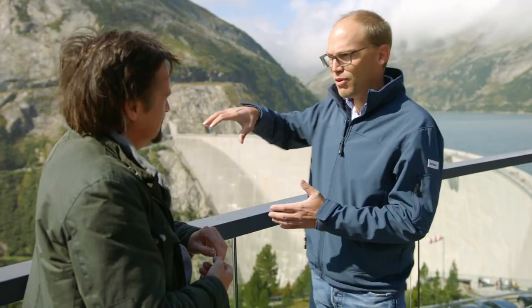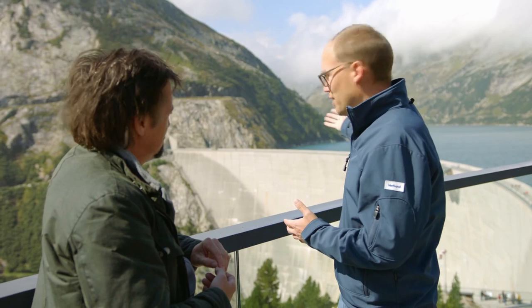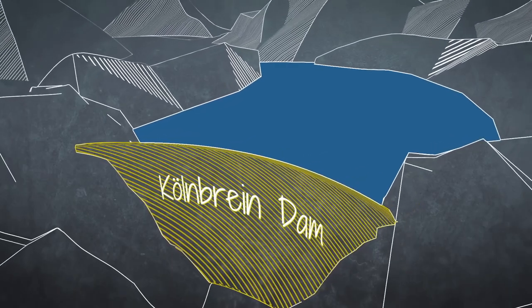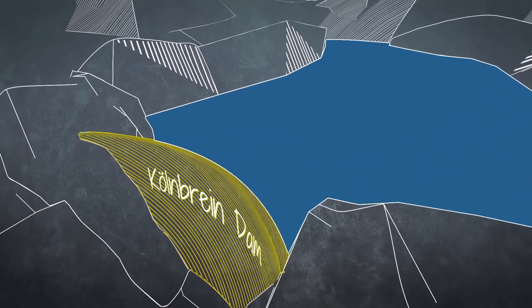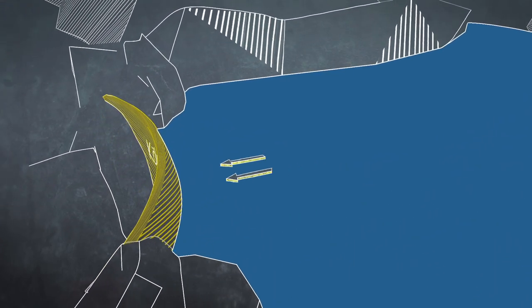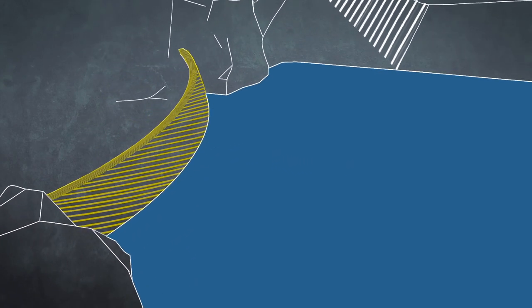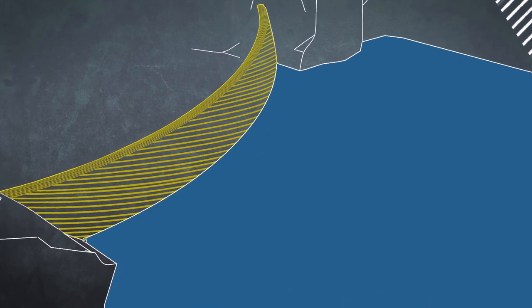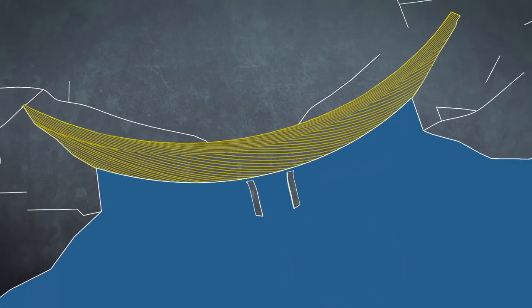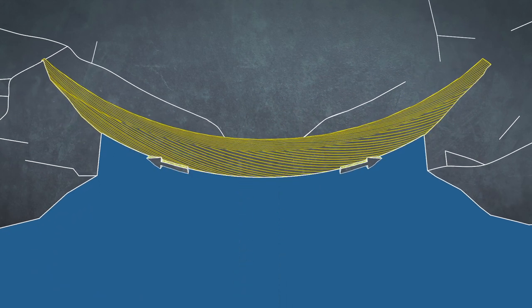If you turn it by 90 degrees, it looks like that. The dam's arch shape means the force of the water on the wall is transferred into the mountains on either side. So it actually uses the power of the water behind it to secure itself into the valley. It does this so well, they were able to make it very thin, using far less concrete in the process.